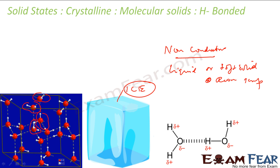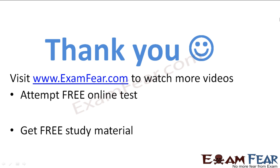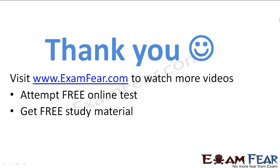To summarize: in hydrogen-bonded molecular solids we have hydrogen bonds; in polar molecular solids we have poles, for example H⁺ and Cl⁻; and in non-polar molecular solids we have no polar force, for example iodine and chlorine. Visit examfear.com to watch more videos, attempt free online tests, get study materials, find tutors and mentors, and much more.